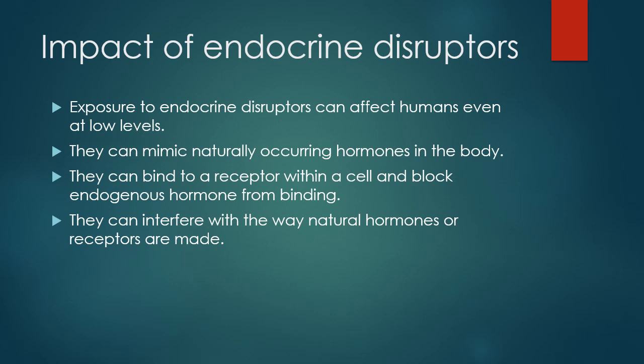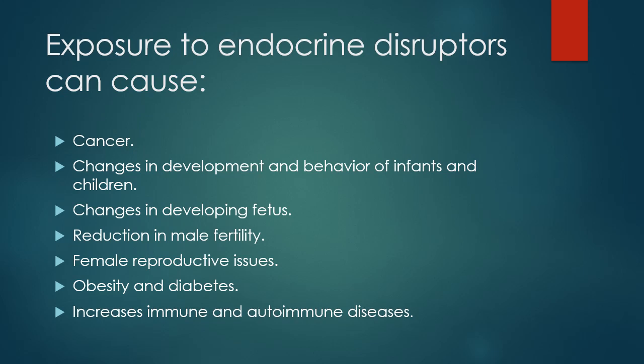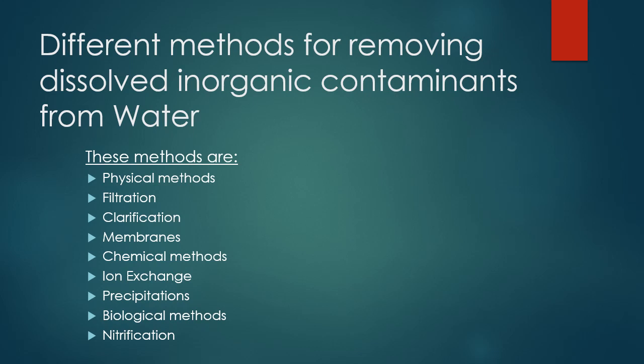There are several impacts that endocrine disruptors have on the body. Exposure can increase the chances of getting prostate, ovarian, or mammary cancer. It can cause changes in development and behavior of infants and children, changes in the developing fetus, and reduction in male fertility — consequently, the number of males born declines. It can cause female reproductive issues such as infertility and early puberty, obesity, diabetes, and increased immune and autoimmune diseases.